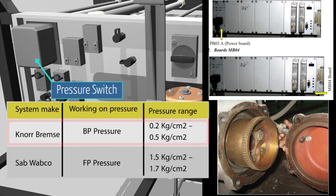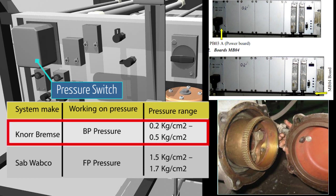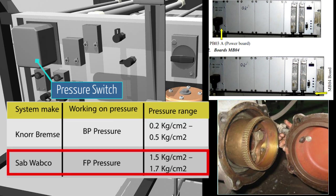NOR-BREMS: BP pressure 0.2 kg per square centimeter to 0.5 kg per square centimeter. SAAB WABCO: FP pressure 1.5 kg per square centimeter to 1.7 kg per square centimeter.